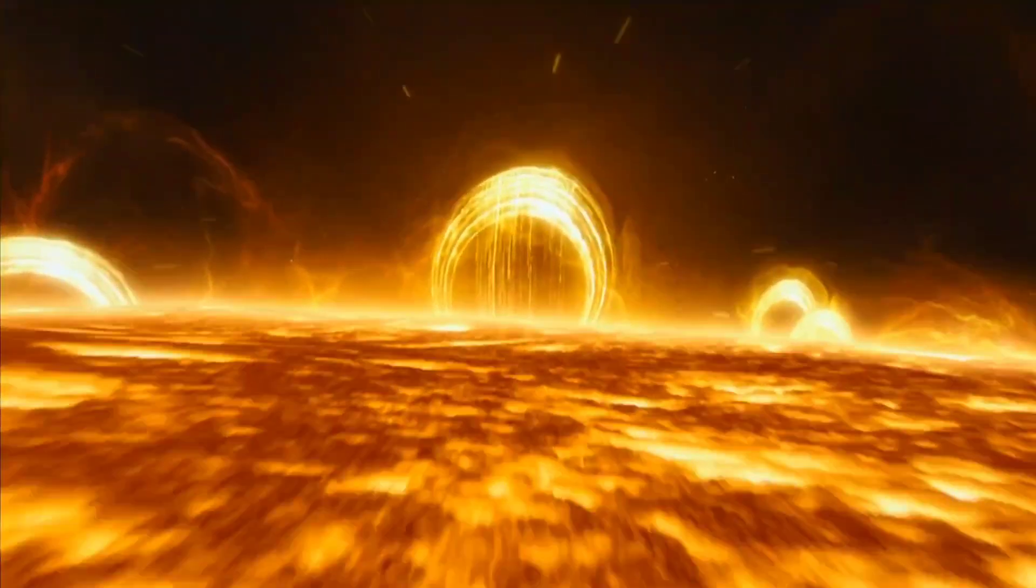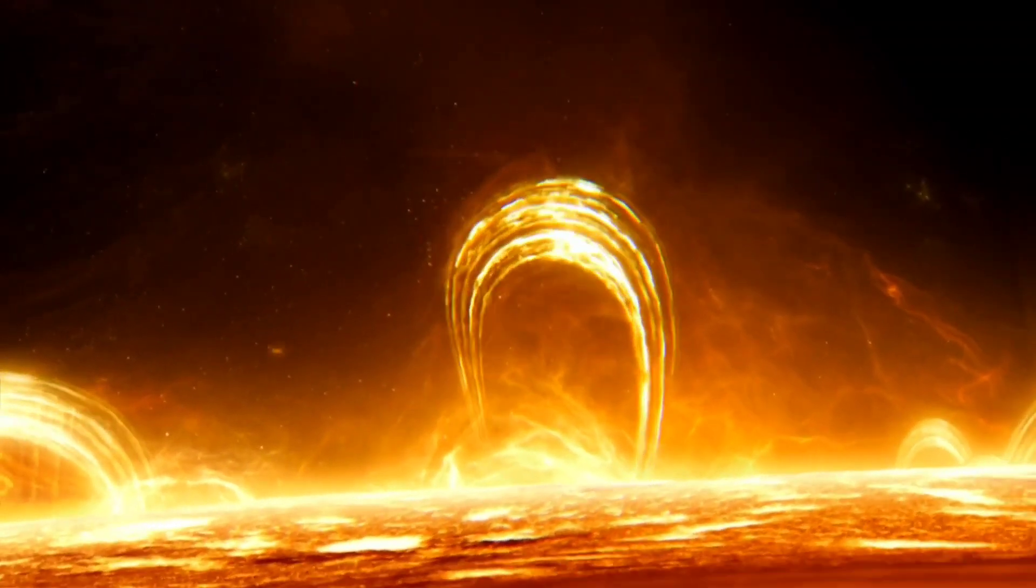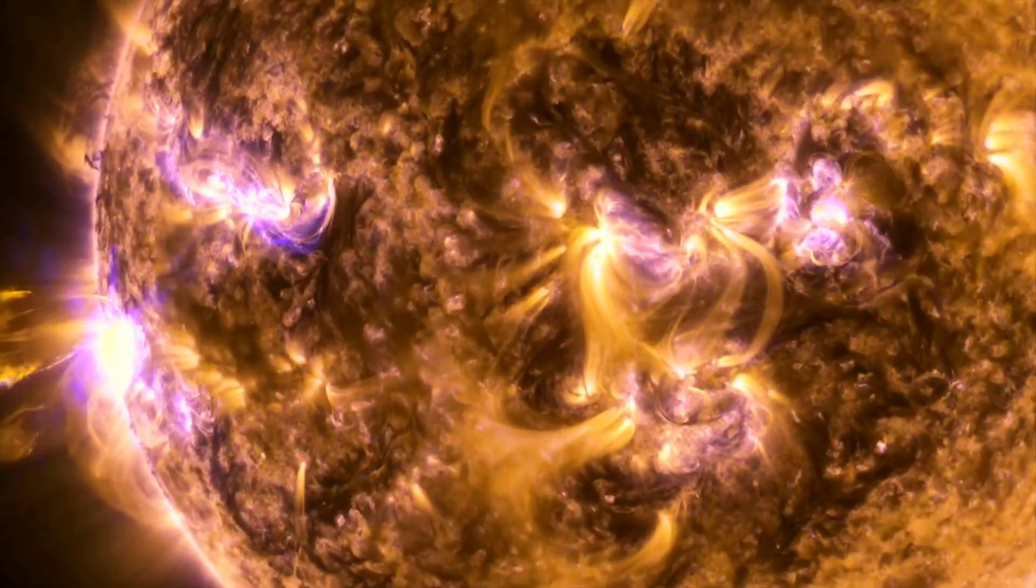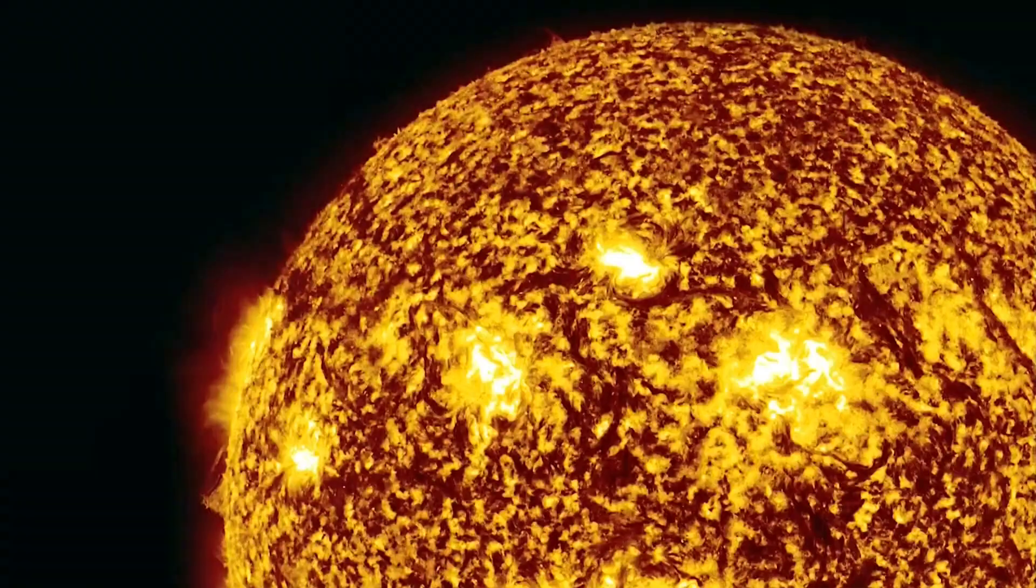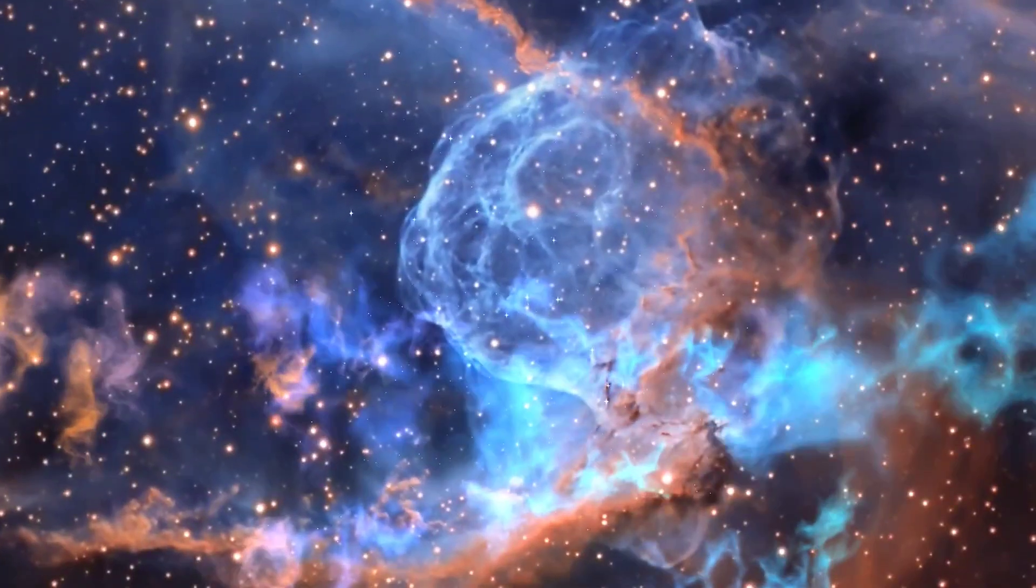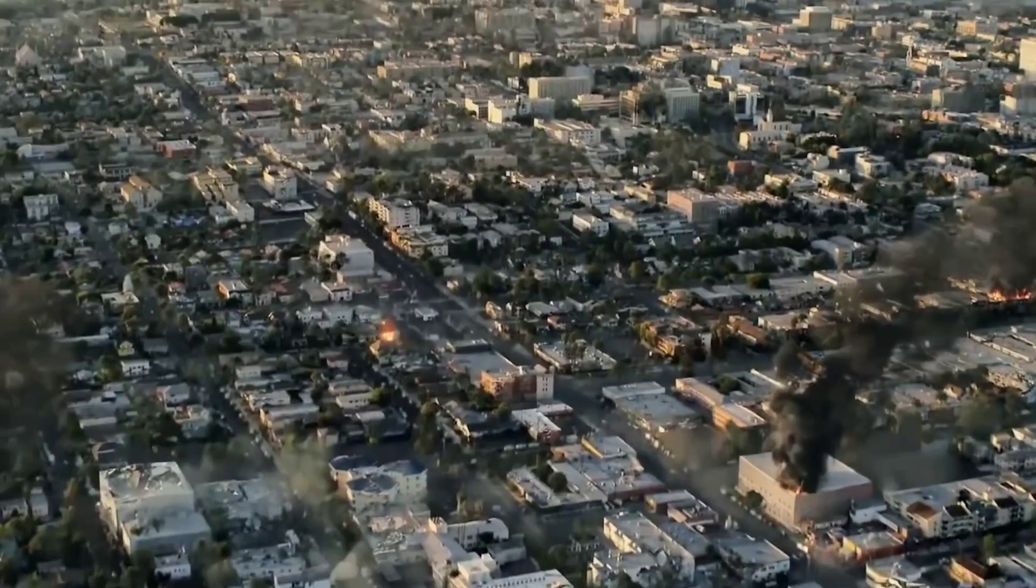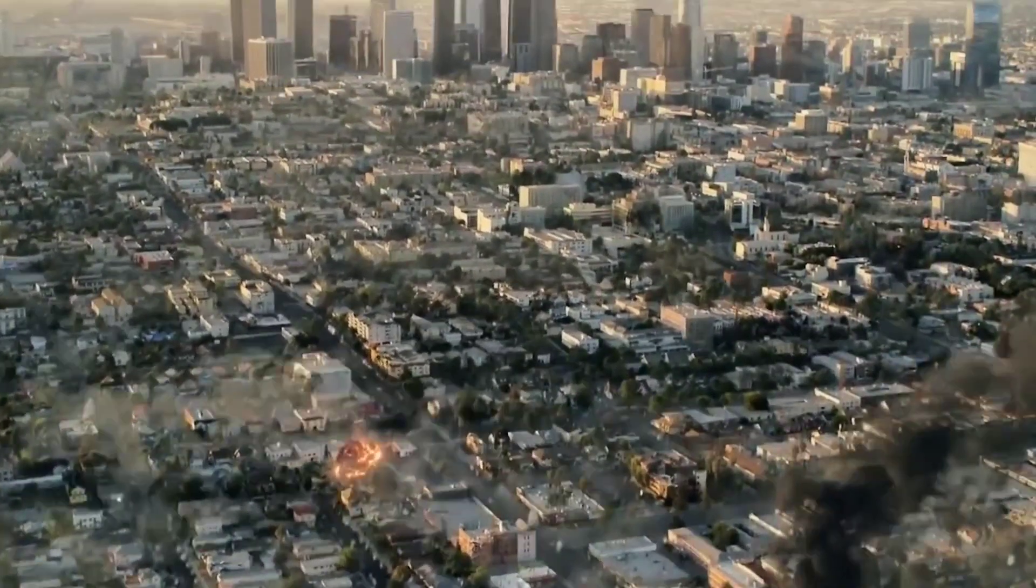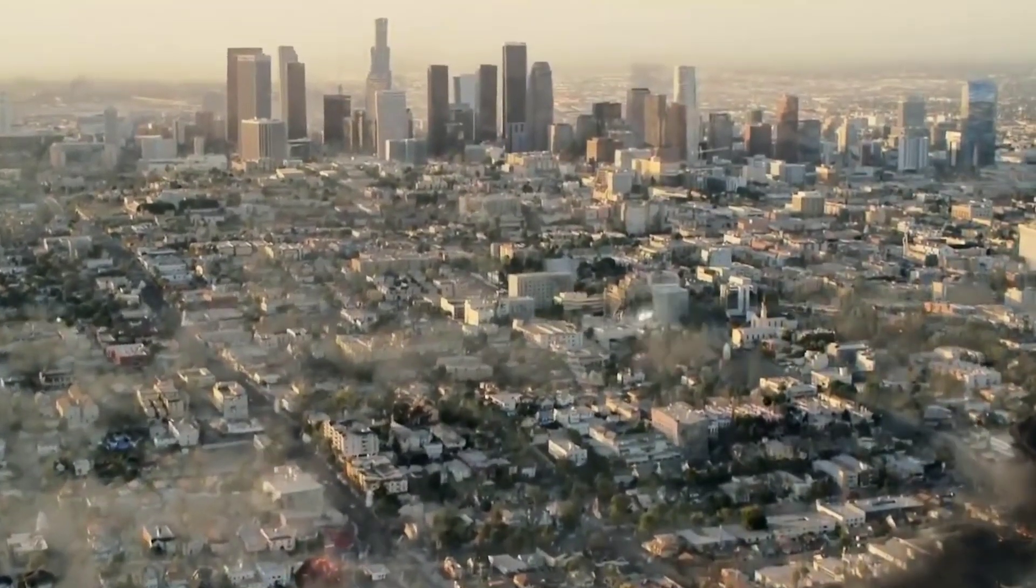Since the Big Bang, this gamma ray flare has been one of the most energetic flares in the cosmos. These surges can last anywhere from a fraction of a second to several hours. It would be a chaotic environment for a planetary system to live in such close proximity.